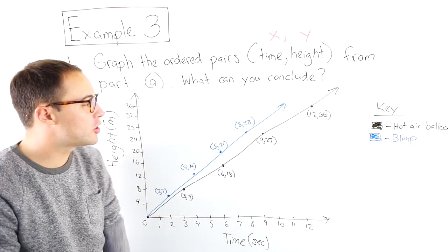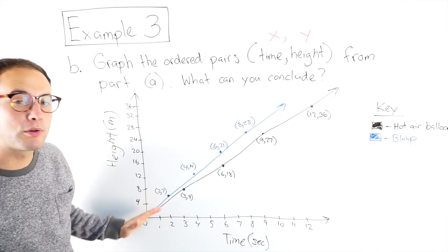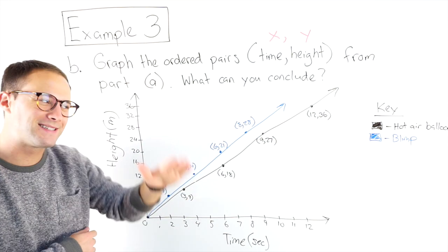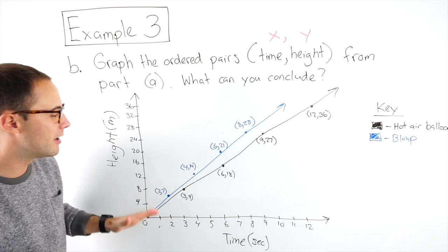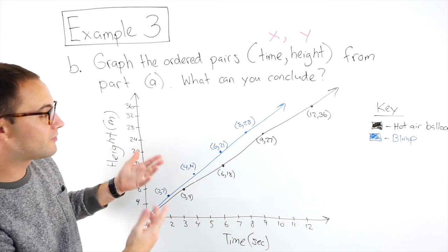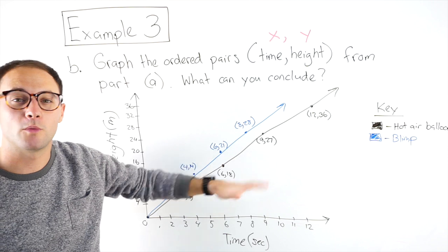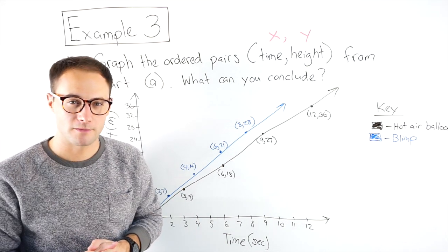The question, what can you conclude? Well, we can conclude that because this blue line, the line for the blimp is steeper. That's the slope. We're talking about the slope. You'll figure that out later. But it's steeper. That means the blimp rises faster than the hot air balloon, which is exactly what we talked about in part A. Here's one more to try on your own.